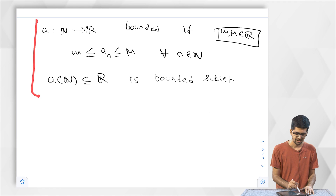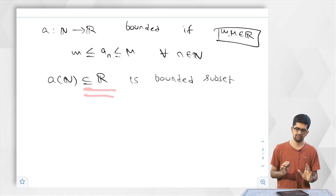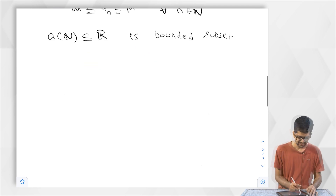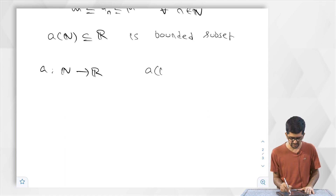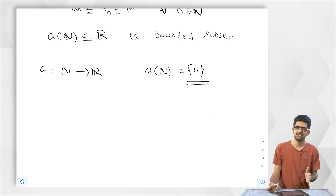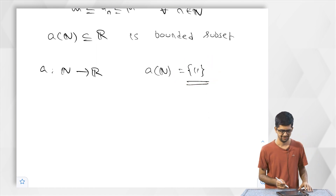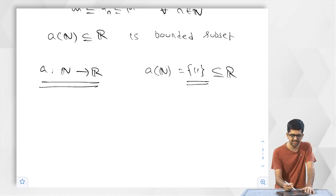If somebody gives us a sequence, we need to look at the image and see if it is bounded. For the constant sequence A_N = 11, the image is simply the singleton set {11}. Every singleton (every finite set) is bounded. So this is a bounded subset of R, and therefore this sequence is a bounded sequence.